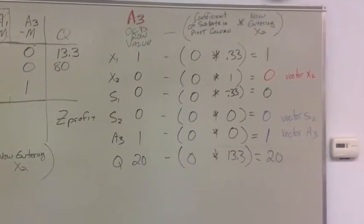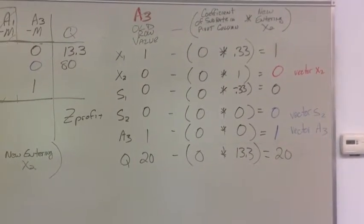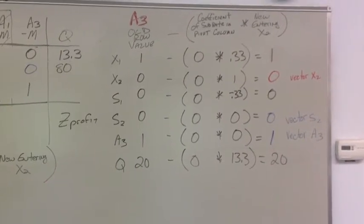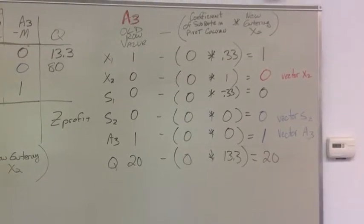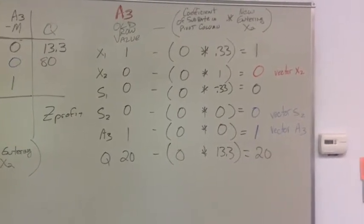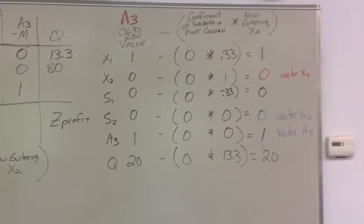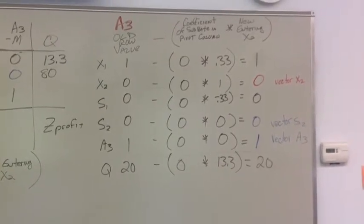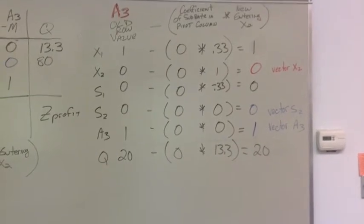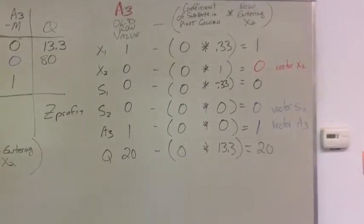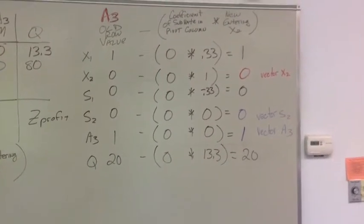So we took the old a3 row, 1, 0, 0, 0, 1, and 20. From that, we subtracted the summation, I mean, the result of our coefficient of our subrate in the pivot column times the new entering column. But the subrate in the pivot column was 0. So 0 times anything is 0. So effectively, the a3 row becomes itself again. But again, notice the vectors line up. The vector for x2 is 0. The vector for s2 is 0. And the vector for a3 is 1. So let's go fill in that.